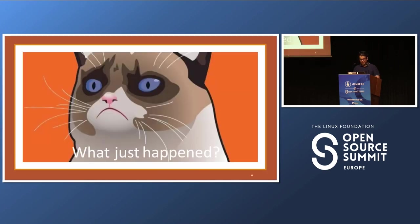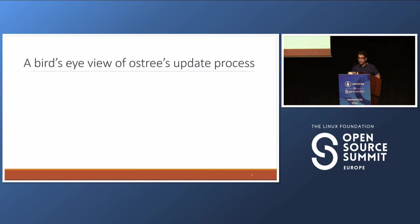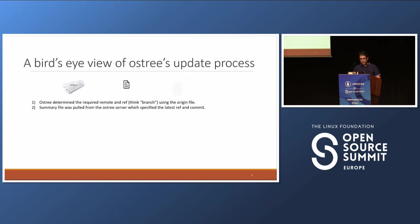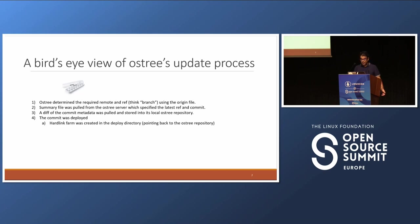What just happened? Let's take a bird's-eye view of OSTree's update process. After typing OSTree admin upgrade dash R, OSTree determined the required remote and ref — just think branch for a moment — using the origin file. The summary file was pulled from the OSTree server, which specifies the latest remote and commit. A diff of the commit metadata was pulled and stored onto the local OSTree repository, and the commit was deployed, meaning a hardlink farm was created in the deploy directory pointing back to the OSTree repository. The uenv.txt file was updated, reflecting the deployment, as well as which kernel and initramfs to use.